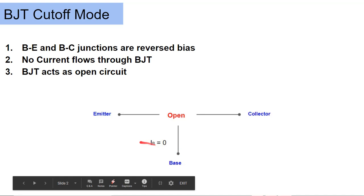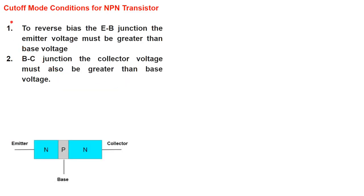So the base current is zero. Let's understand this situation very deeply. What should be the cutoff mode conditions for an NPN transistor? As you know there are two types of transistors: NPN transistor and PNP transistor. So first we discuss the cutoff mode conditions for NPN transistor.